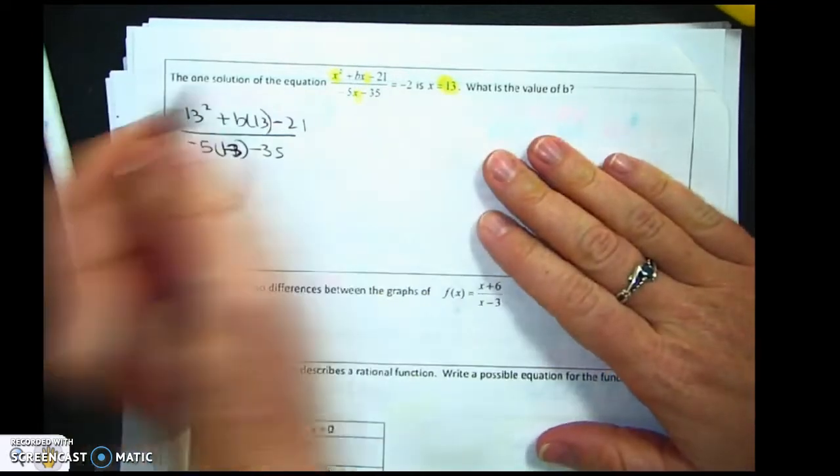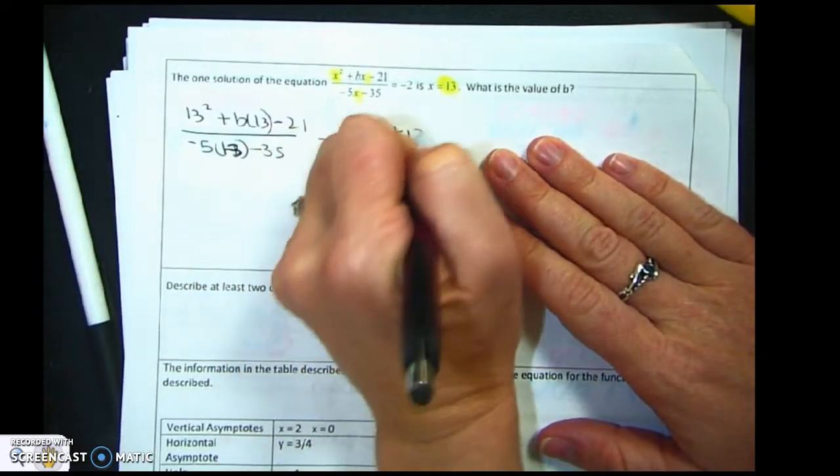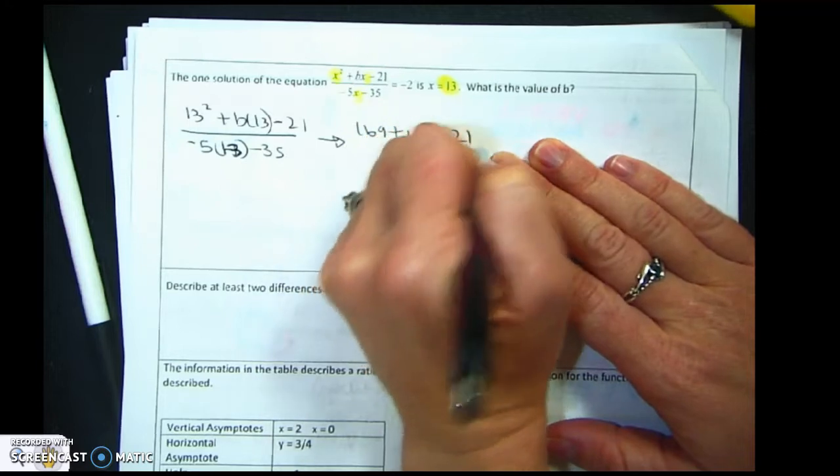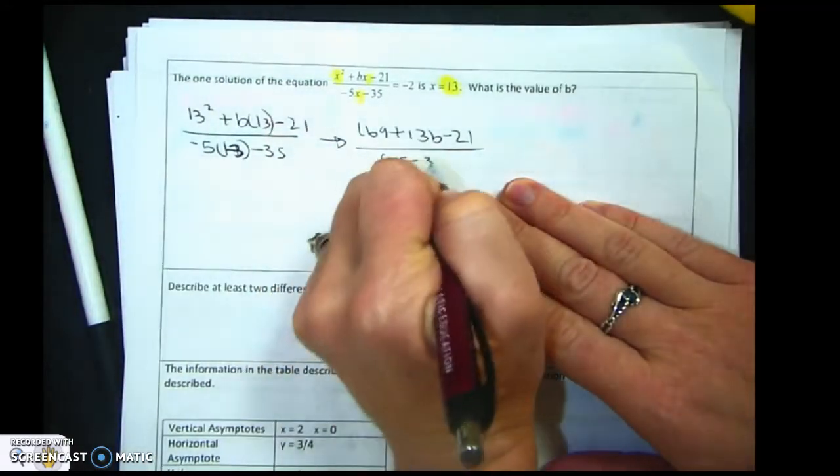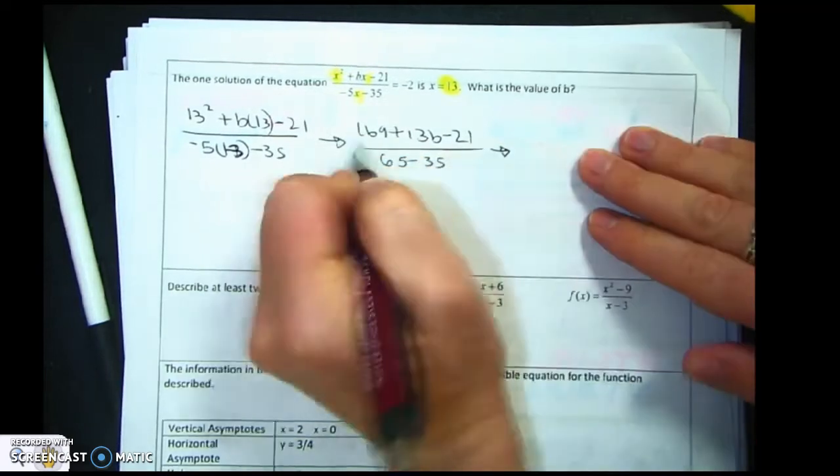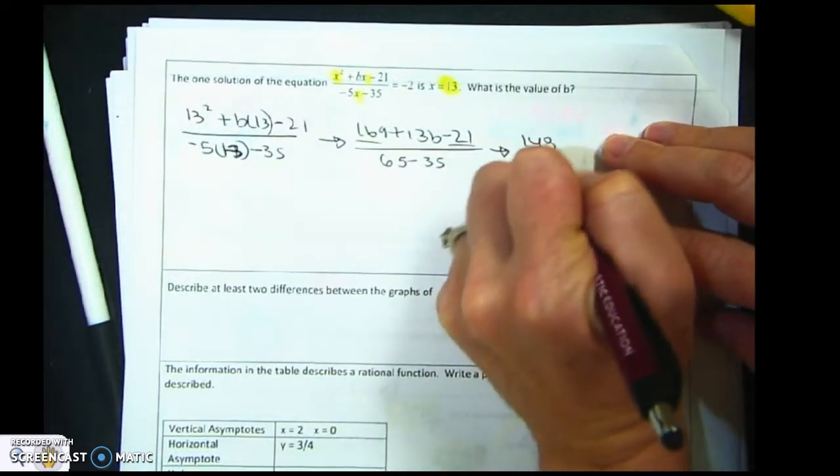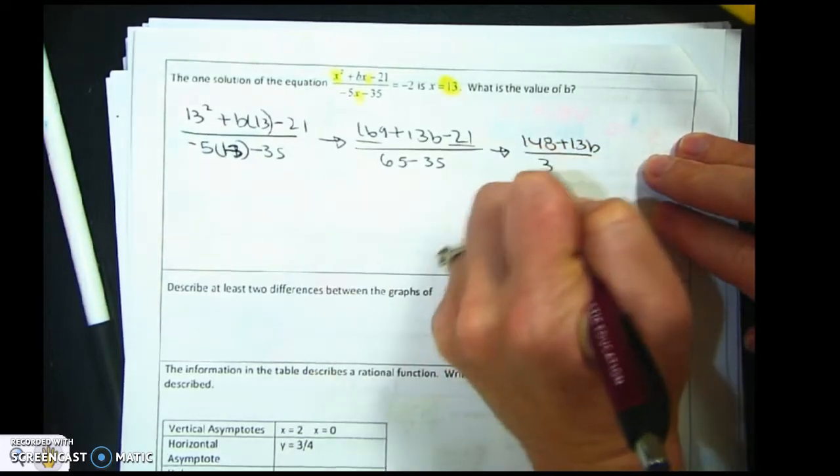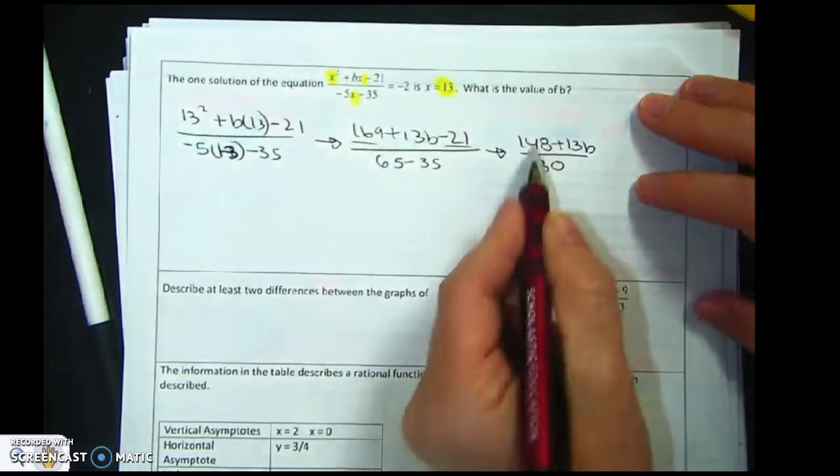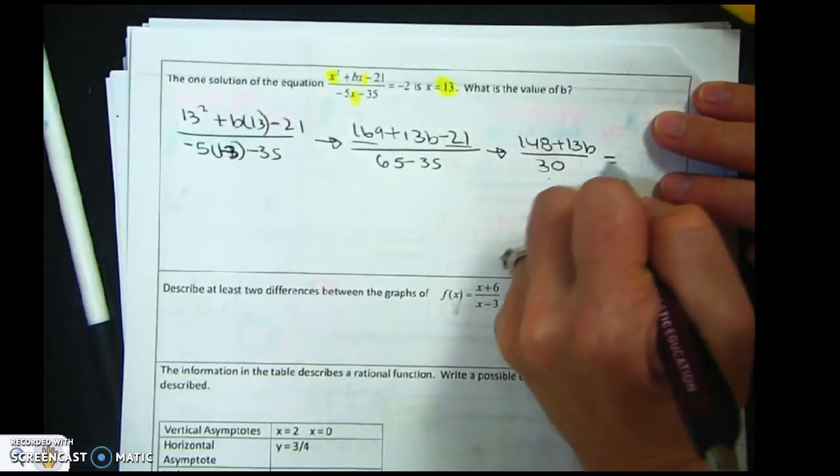So I'm going to go 13 squared plus b times 13 minus 21 over negative 5 times positive 13 minus 35. 13 squared is 169 plus 13b minus 21. 13 times 5 is 65 minus 35, so I'm just simplifying right now. These two are the same, so that would be 148 plus 13b over 30. And I feel like that's as simplified as I can do, equals negative 2.